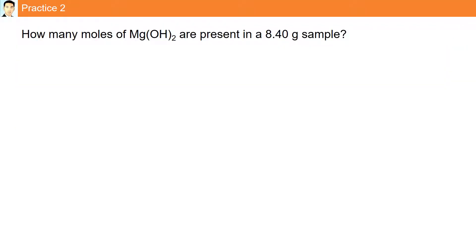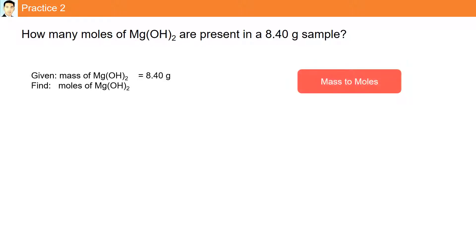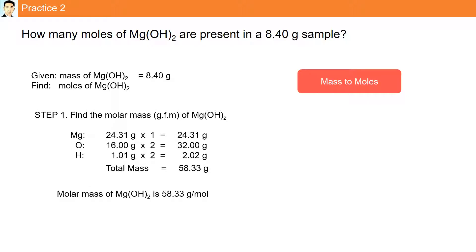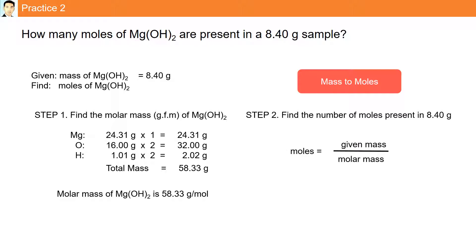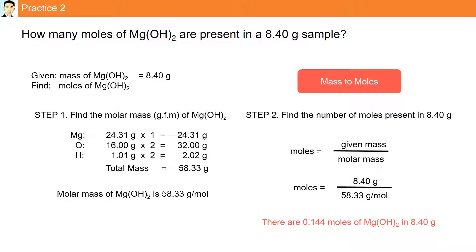Practice: how many moles of Mg(OH)2, magnesium hydroxide, are present in 8.40 grams of the sample? We are given the mass and need to find the moles — going from mass to moles. The gram formula mass of Mg(OH)2 is 58.33 grams per mole. Using the formula, moles equals given mass divided by molar mass: 8.40 grams divided by 58.33 grams per mole gives 0.144 moles of Mg(OH)2.